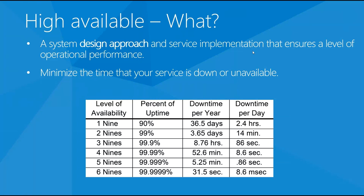High availability is a system design approach that ensures a pre-arranged level of operational performance during a specific period. To achieve that - to have all components of our infrastructure 100% operational - we need redundant machines, redundant network components, and software components spread over the machines. Of course 100% operational is not possible and it's extremely costly to reach uptime close to 100%. Our aim generally is to minimize the time that our service is down or unavailable.